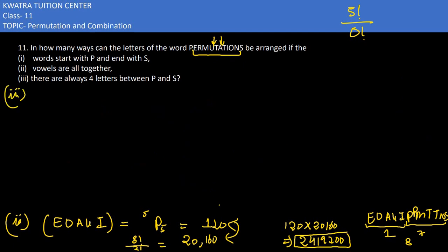The 3rd part says there are always 4 letters between P and S. So if P is 1st, then where is S? It would be at 6th.